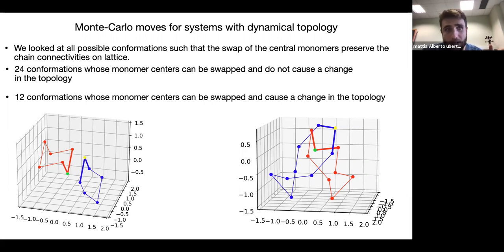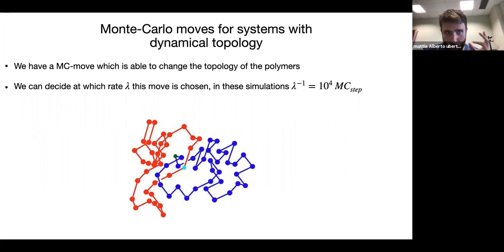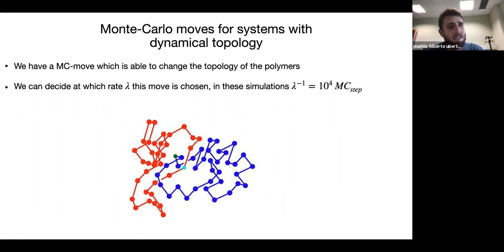Once these 12 conformations were identified, the swapping move was established: scanning over all monomer couples in the system, and when two monomers are found in one of the 12 topology-changing conformations, the central monomers are swapped. The only parameter of this model is the rate of action of this move — how frequently the Monte Carlo swap move is applied. This finite rate is important because topoisomerases work at a finite rate.